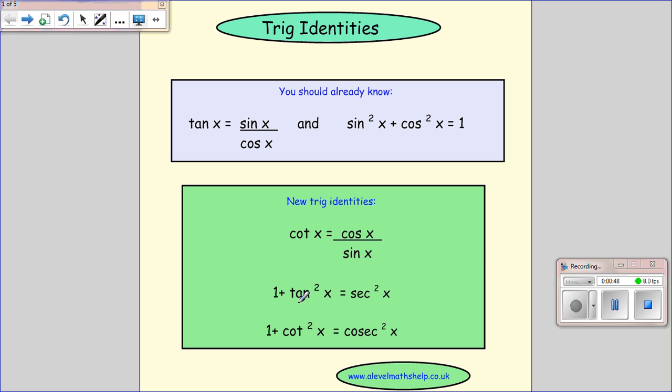And then we're going to do 1 plus tan squared x equals sec squared x. And sec squared third letter is c, so that's 1 over cos squared x. And then we get 1 plus cot squared x equals cosec squared x. And that comes from 1 over sin squared x.